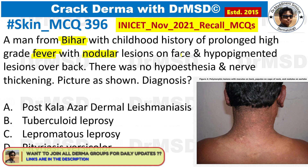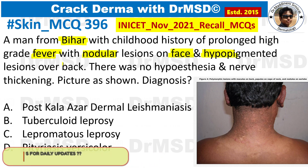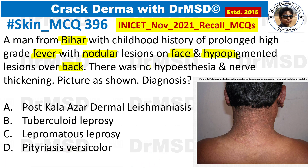Nodular lesions are present over the face and hypopigmented lesions are present over the back. The question clearly mentions one important negative history: there is no hypoesthesia, and on examination there was no nerve thickening. The picture shown demonstrates macules, papules, and nodules present on the earlobe.